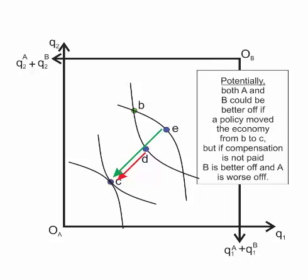So what this means is that potentially point C is an improvement over point B. That's potentially. But if compensation is not paid, if we leave the economy at point C, then even though potentially they both could be better off, clearly the final outcome is that individual B is better off and individual A is worse off.